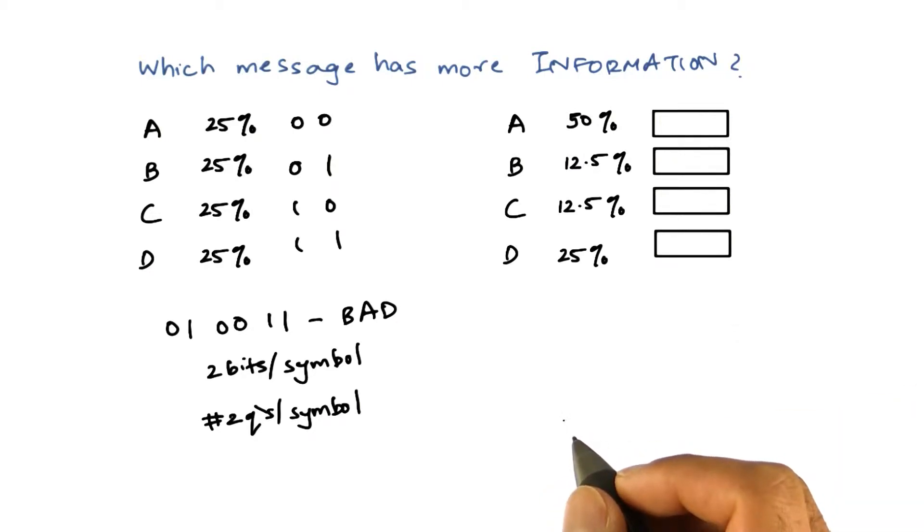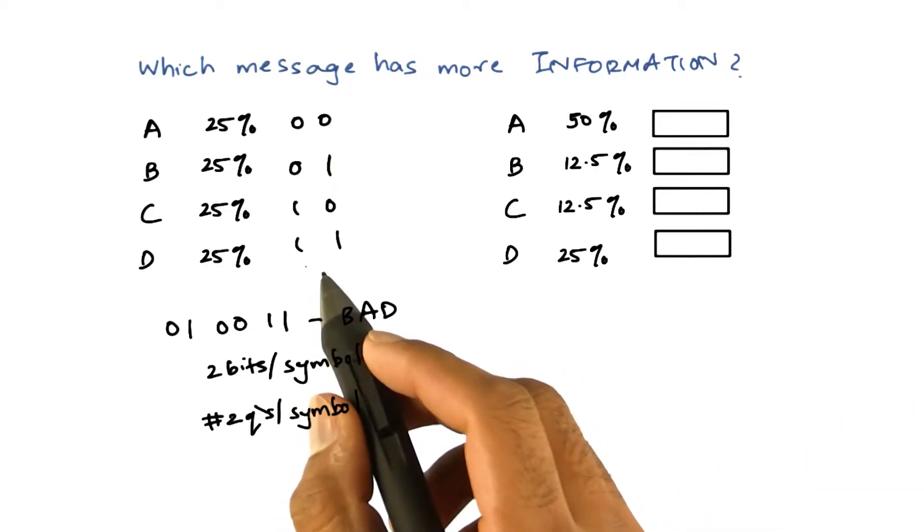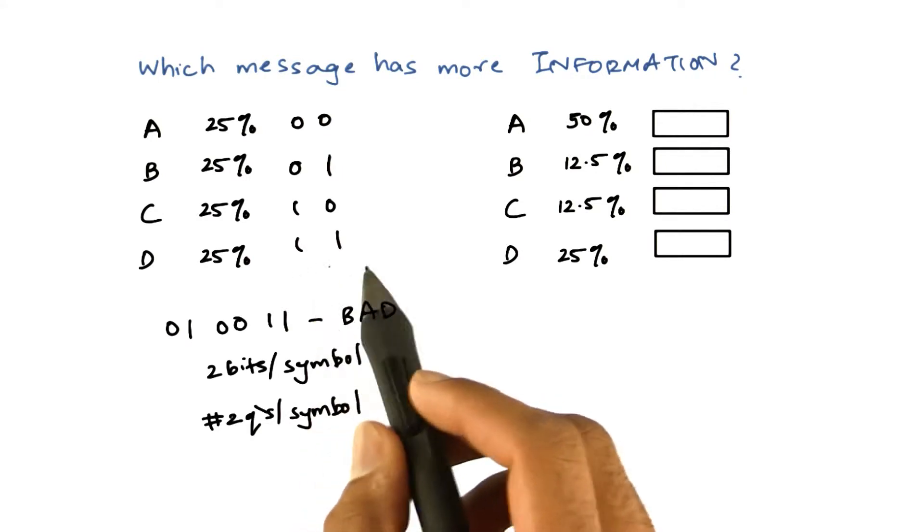The way you can think about this question is by looking at the first message and why it makes sense to have two bits per symbol.